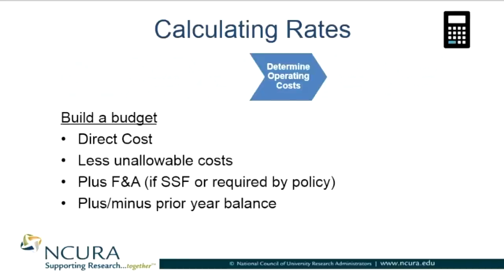Now that you know what your service will be, your user demand, and how you'll measure, you'll need to understand your total costs. Generally, you want to start with your direct costs such as personnel and supplies — a detailed understanding of these costs is really important to setting the rates. Next, you should remove unallowable costs such as marketing and bad debt, which are common ones. These are unallowable on federal awards and are similarly unallowable in service center environments that charge federal awards.